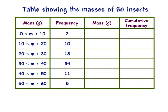Before plotting the graph, we usually need to complete a cumulative frequency table. The table in our example shows the masses of 80 insects. We start by filling in the third column, which, like the first column, is called mass. In this column, however, we write the upper bound of each class from the first column.